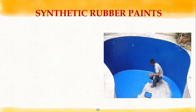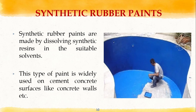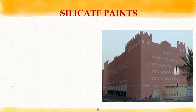Next is synthetic rubber paint. Synthetic rubber paints are made by dissolving synthetic resins in suitable solvents, and suitable pigments are added to vary the color. This paint is widely used on cement concrete surfaces like concrete walls. It is less affected by rain and sunlight, has good resistance against acids, alkalis, and moisture, dries very quickly, and maintains uniform color throughout the surface.